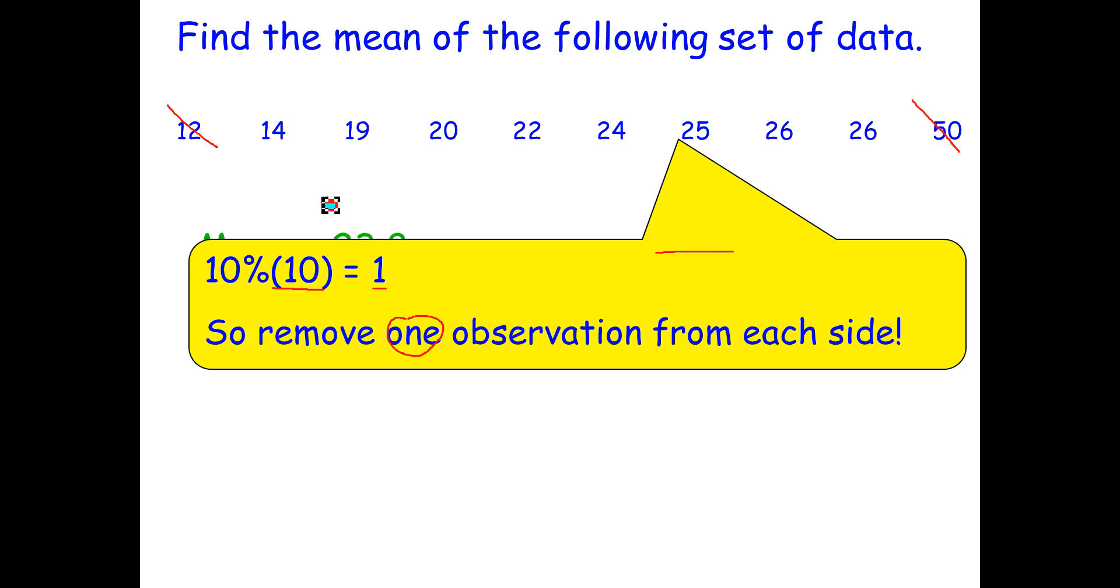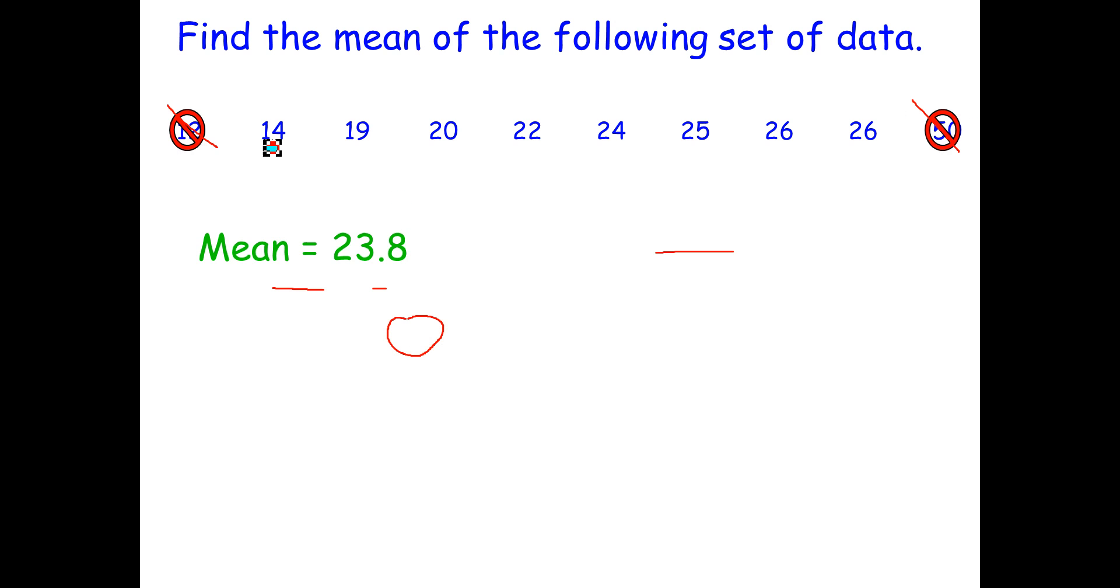So moving on, now that I've eliminated those data points or I've trimmed the mean by knocking out those certain points, I can take the mean of the remaining data points. And that will give you my trimmed mean. So I add up the remaining data points and I divide by 1, 2, 3, 4, 5, 6, 7, 8. Because there are 8 data points left in the set. And that gives me a mean of 22.